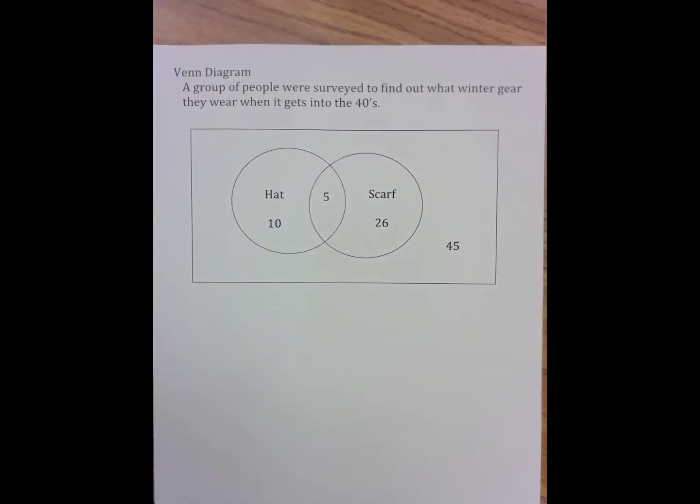These notes are on Venn diagrams. Venn diagrams initially can be a bit confusing. So in this Venn diagram, a group of people were surveyed to find out what winter gear they wear when it gets into the 40s, meaning 40 degrees Fahrenheit, so cold.